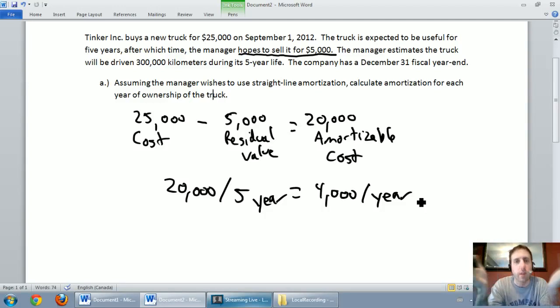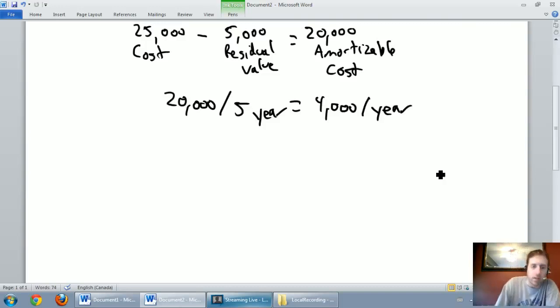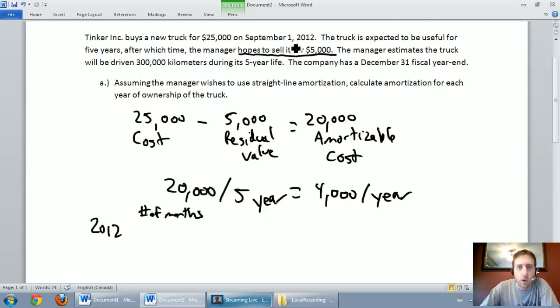So we're all set. We know we want to amortize this at a rate of $4,000 per year. Now let's look at our years. We've got the year 2012. I just want to calculate the number of months we're going to own the thing in 2012.